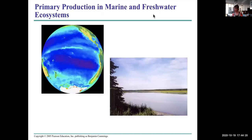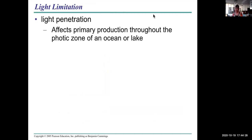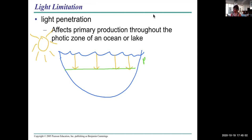I'd like to look at primary production in marine and freshwater ecosystems - marine systems and freshwater lakes. What limits production in a watery environment is light penetration, which affects primary production throughout the photic zone. Say this is the lake and this is the sun - the sun's rays only penetrate to a particular depth. That's the photic zone. Where light doesn't penetrate is the aphotic zone, and there can be no primary production there because there's no light.